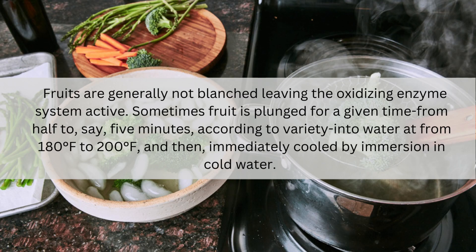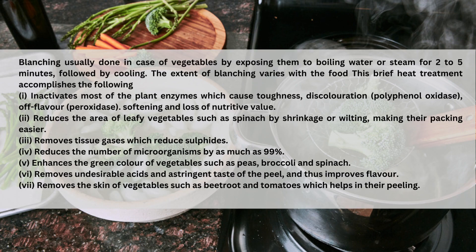Blanching: Fruits are generally not blanched, leaving the oxidizing enzyme system active. Sometimes fruit is scalded for 2-5 minutes in water at 180°F to 200°F and then immediately cooled by immersion in cold water. Blanching is usually done in the case of vegetables by exposing them to boiling water or steam for 2-5 minutes followed by cooling. This brief heat treatment inactivates most of the plant enzymes which cause toughness, discoloration, softening and loss of nutritive value.